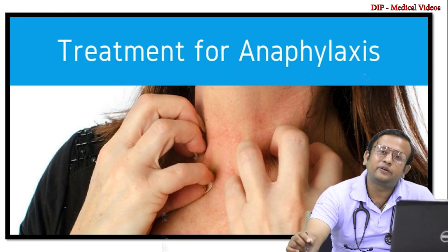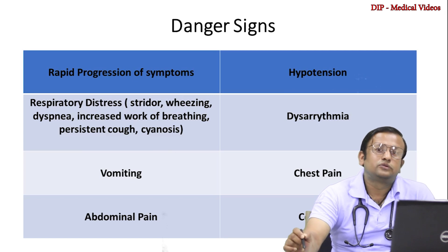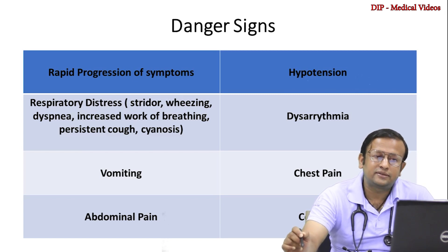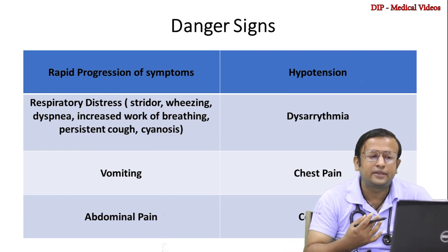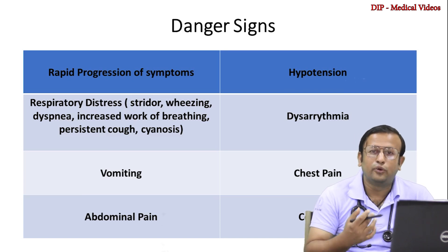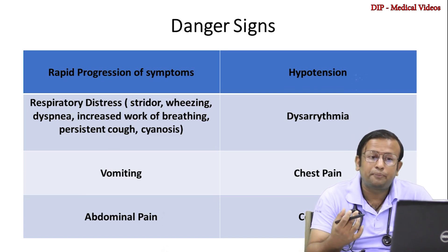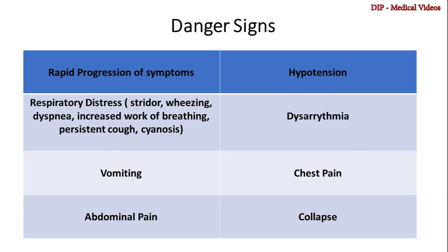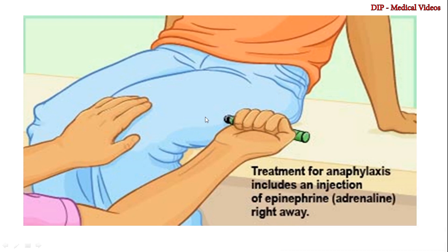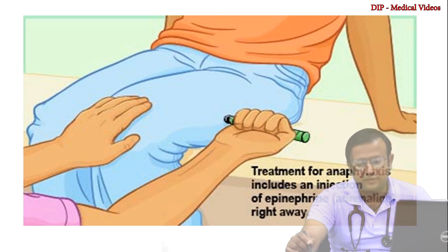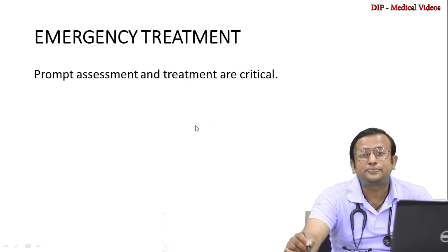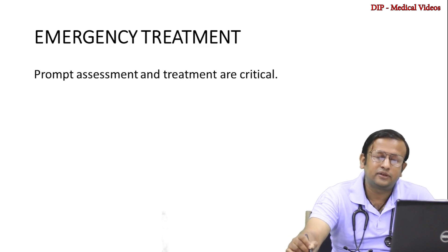Now let's focus on treatment of anaphylaxis. We have to evaluate the danger signs: rapid progression of symptoms, respiratory distress such as stridor, wheezing, dyspnea, increased work of breathing, persistent cough, cyanosis, vomiting, abdominal pain, hypotension, dysarrhythmia, chest pain, and collapse. These danger signs have to be evaluated very closely, and the main and foremost treatment of anaphylaxis is adrenaline. Prompt assessment and treatment are very critical and necessary.